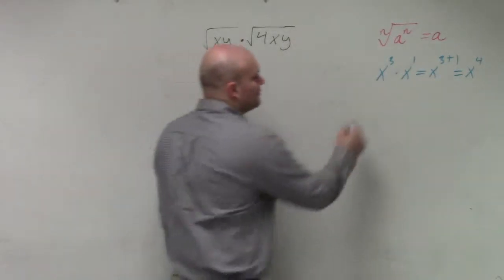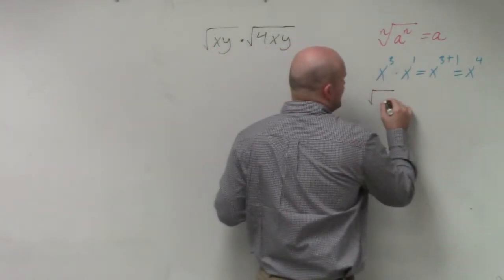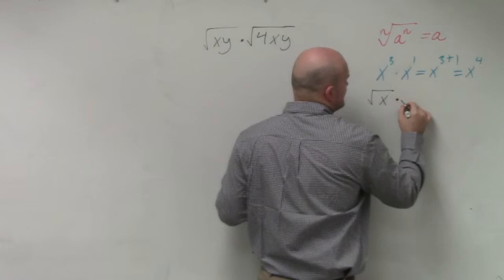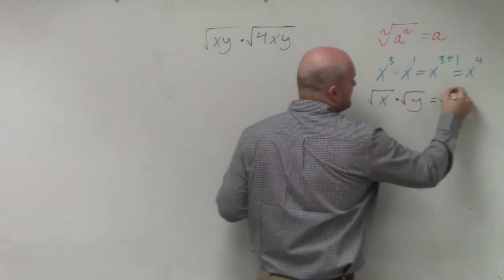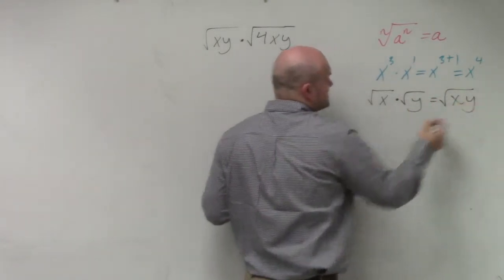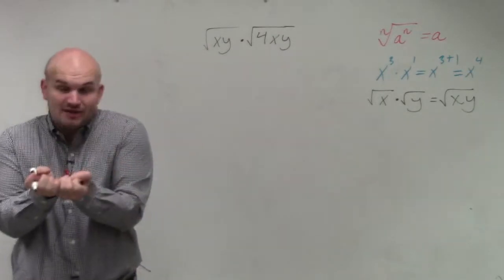And if you don't remember the operation, one of the things we talked about was if you have the square root of x times the square root of y, that could be rewritten as the square root of x times y. So when you have two radicals and you're multiplying,